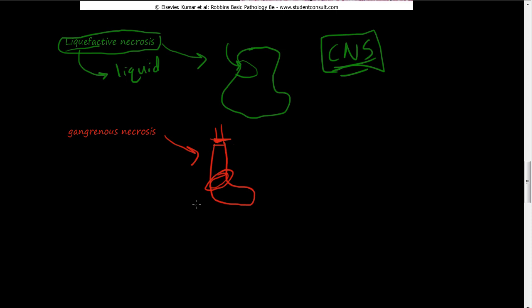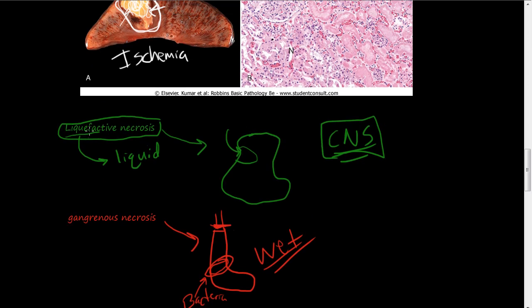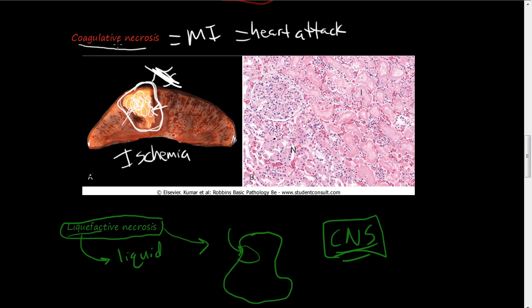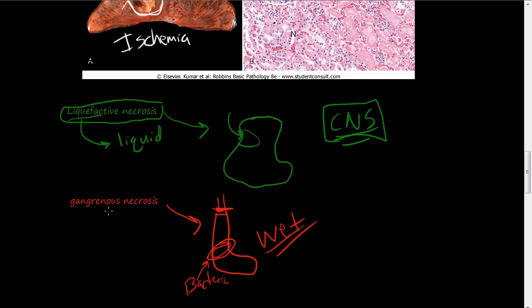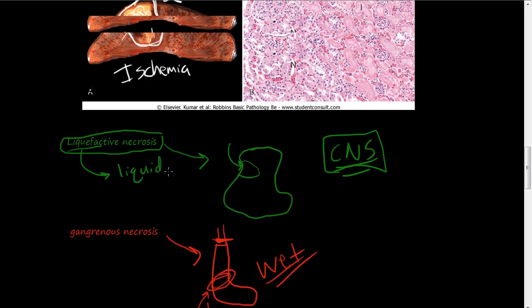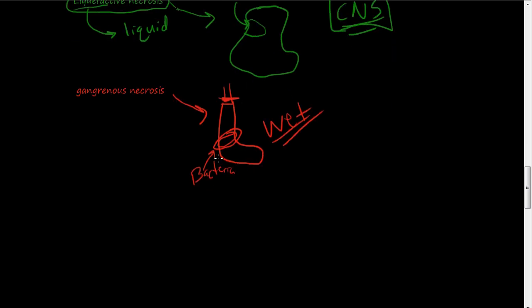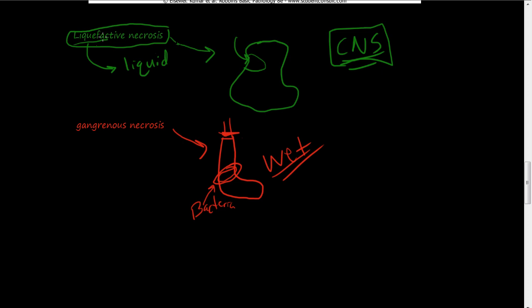And then bacteria can get in here and start causing a liquifactive necrosis. And that is called wet gangrene. I'm sure we've all heard of wet gangrene. Wet gangrene is when bacteria get in there and start causing liquifactive necrosis. But gangrenous necrosis should be, I should put as a subsection of coagulative necrosis. Because gangrenous necrosis is coagulative necrosis, but in the lower limb. And then when bacteria get involved, it turns into liquifactive necrosis of the lower limb. And that's called wet gangrene.